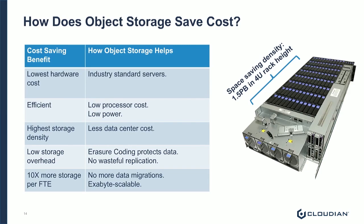That's not done anymore. We now use erasure coding to essentially stripe data across — so it protects data on a grand scale across systems the same way you'd protect it across drives in a RAID array, except now we're doing it across multiple systems, so you can have an entire system failure or even an entire site failure and still be able to get data because it's been striped across multiple devices. This eliminates any replication that's incredibly wasteful.